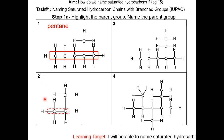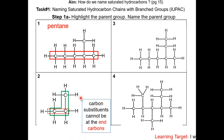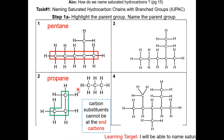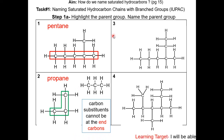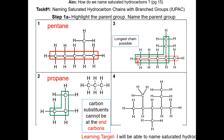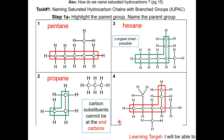For question 2, the parent chain is not 2 carbons long but 3 carbons long. Keep in mind, carbon substituents cannot be at the end carbons. Since single bonds can rotate, the parent chain is 3 carbons long, so the name is propane. Analyze these diagrams carefully, because sometimes the parent group will not be drawn in a linear fashion. In question 3, the parent chain is not 5 carbons but 6 carbons long — that is the longest chain possible, so the name is hexane. For question 4, the longest chain is also 6 carbons long, so the parent chain is hexane.